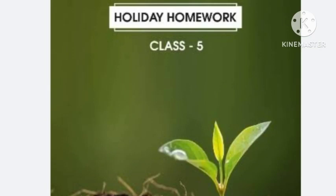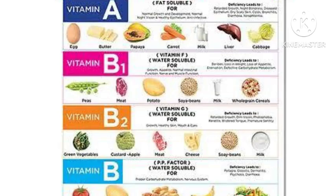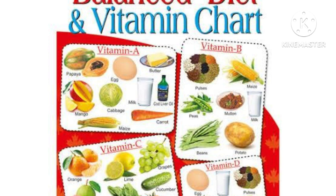Good morning class. In EVS, your holiday homework first topic is deficiency diseases. In this topic, you will make one vitamin chart describing the vitamins, which foods you get them from, and what diseases are caused by their lack. For example, lack of vitamin A causes night blindness, vitamin C causes scurvy, and vitamin D causes rickets. Collect information about which vitamins are lacking in diets and the different types of deficiency diseases people face.